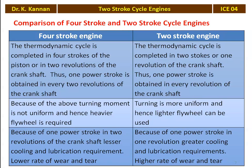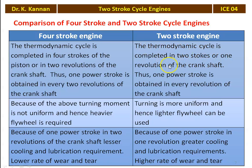We now compare the 2-stroke cycle engine and the 4-stroke cycle engine. In the 4-stroke cycle engine, the four operations are completed in four different strokes and two revolutions of the crankshaft, giving one power stroke every two revolutions. In the 2-stroke cycle engine, all five operations are completed in two strokes or one revolution of the crankshaft, giving one power stroke every revolution.